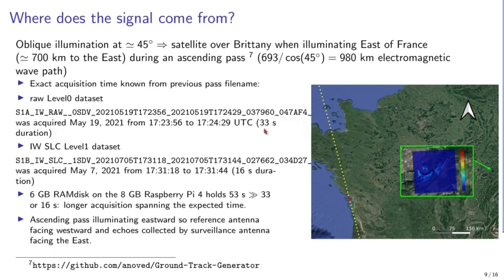We might wonder where the satellite is located as it illuminates our position. Our location is Besançon, eastern France near the Swiss border. Since Sentinel-1 illuminates right-side looking at ~45 degrees from an orbit at 700 km altitude, the satellite is about 700 km to the west — over the Atlantic Ocean — as it illuminates Besançon. The flight path is plotted using a ground track generator fed with the two-line element data, imported into QGIS.